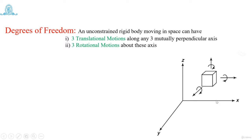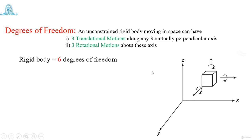Right now we have considered only a local coordinate system having three mutually perpendicular axes. According to that, the body can have three translation motions and three rotational motions. So, as far as a rigid body moving in space is concerned, it can have a maximum of three plus three — six degrees of freedom. Three translation and three rotational motions. That is the generalized concept of degrees of freedom.